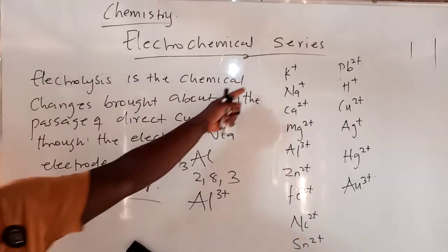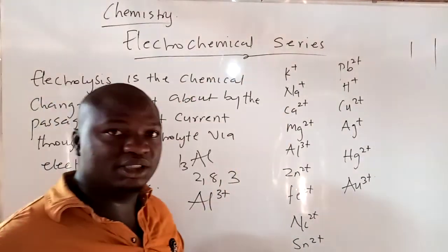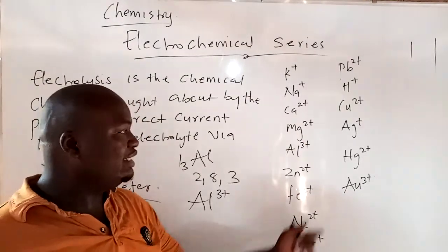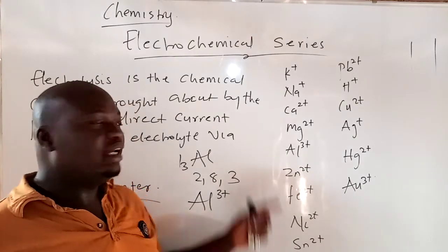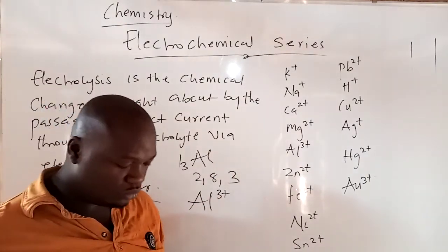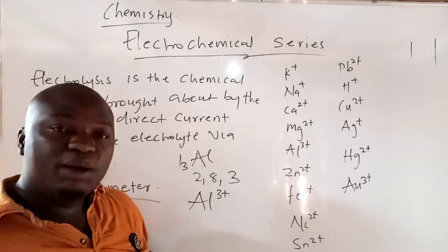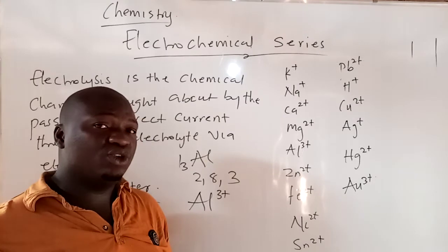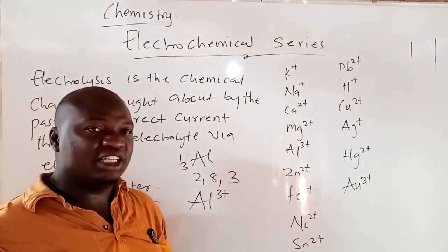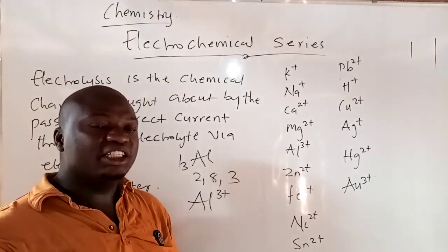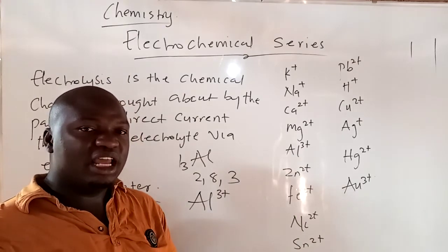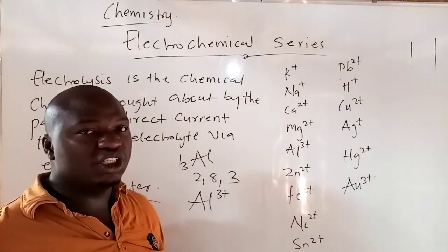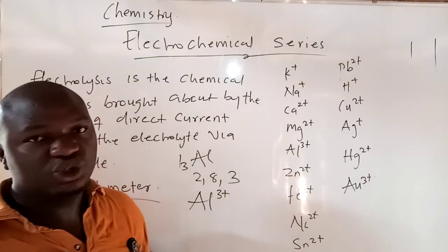Now coming to this side of the board — this is the electrochemical series. You cannot understand electrolysis without actually understanding these things I wrote here. Whenever an element loses an electron and becomes positively charged, it is called a cation. Whenever an element gains an electron and becomes negatively charged, it is called an anion. Please note that very well.